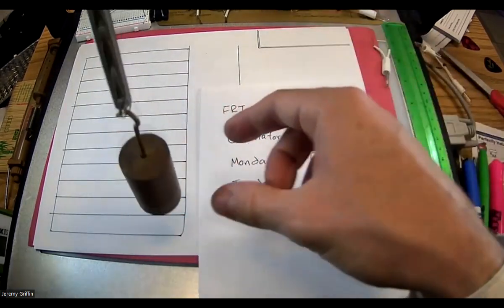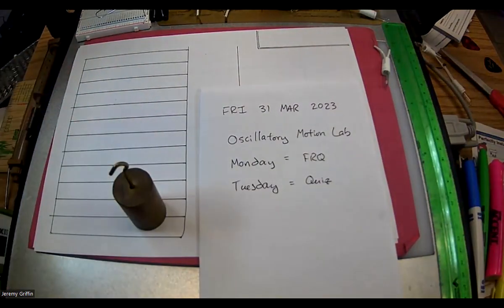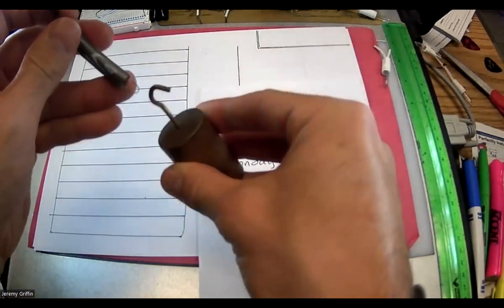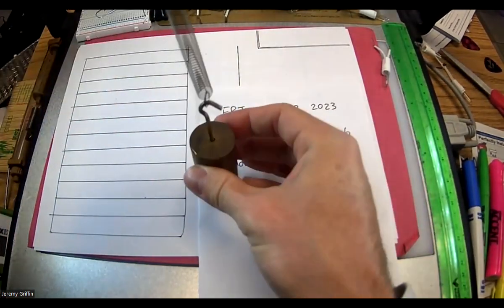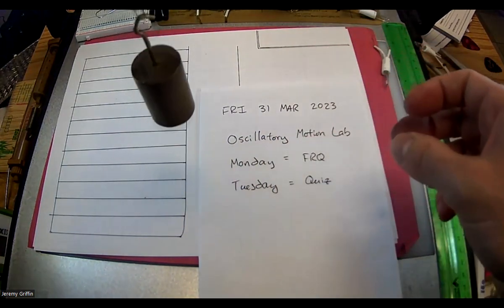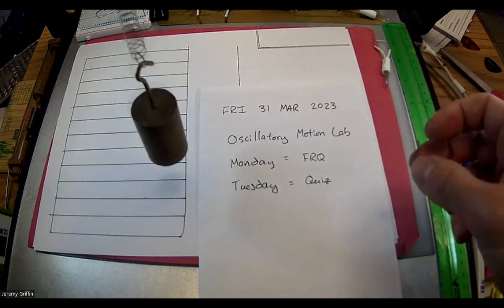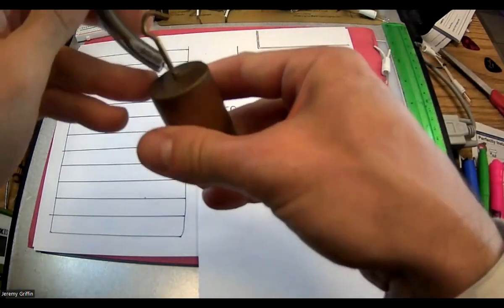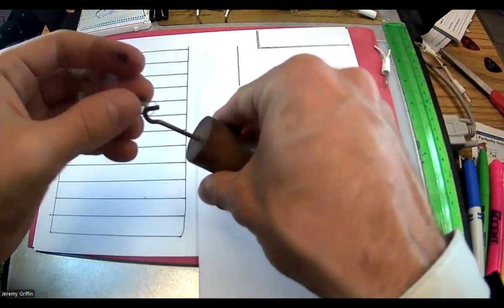I picked a really stiff spring. Let me get one that's not as stiff — the less stiff ones look a little better. I've got one already hooked up. This one has less spring constant. Let's watch this thing bob up and down — one, two, three, four, five — just count the number of cycles.